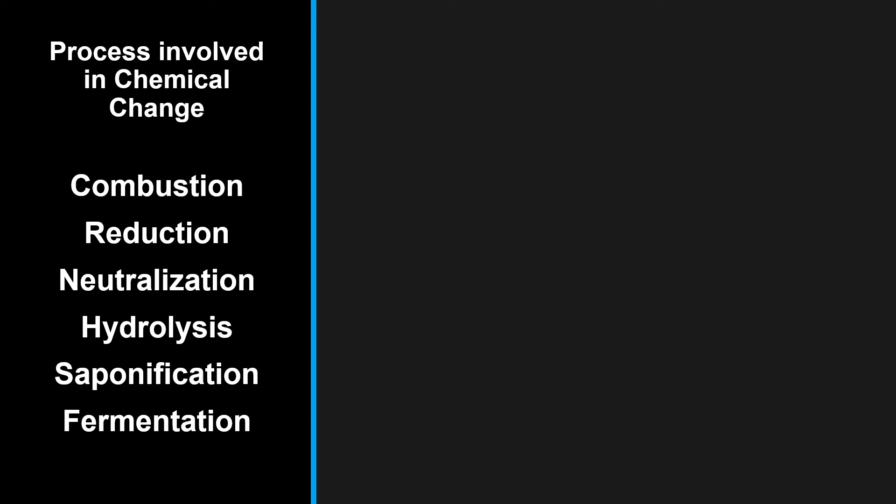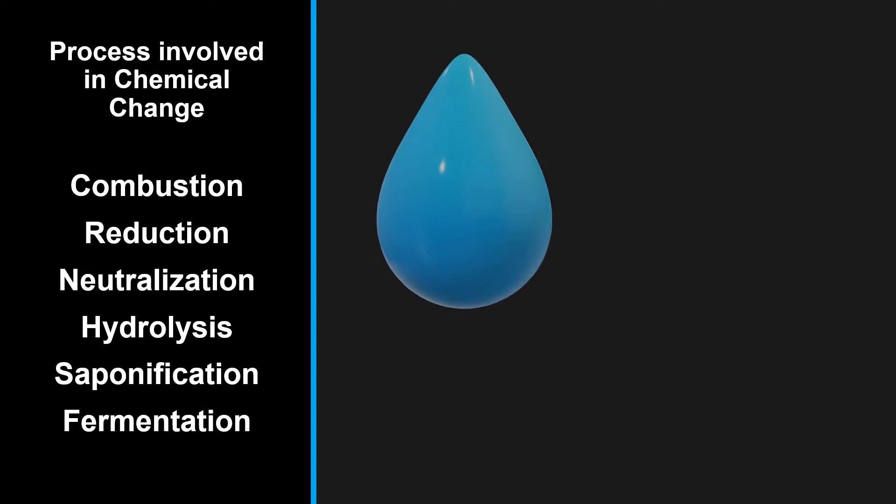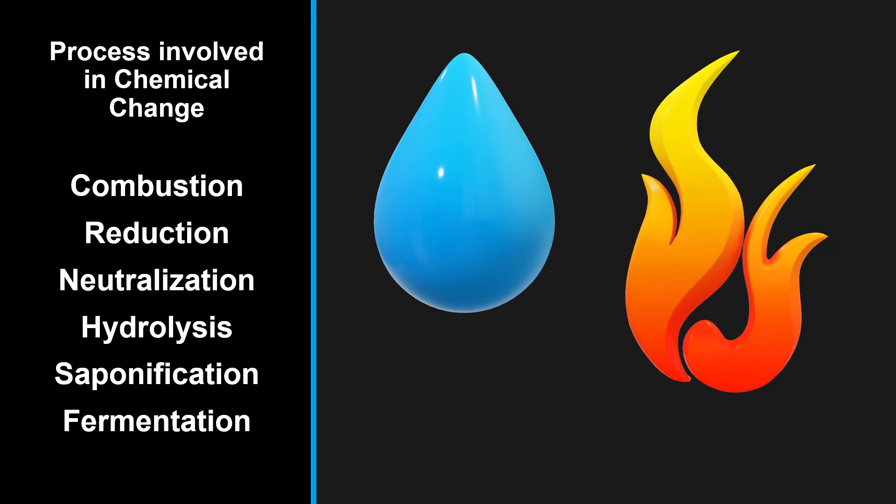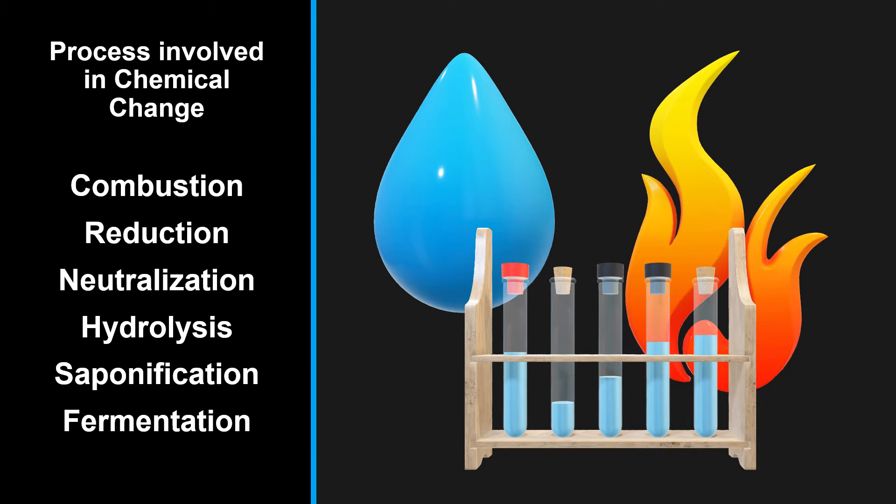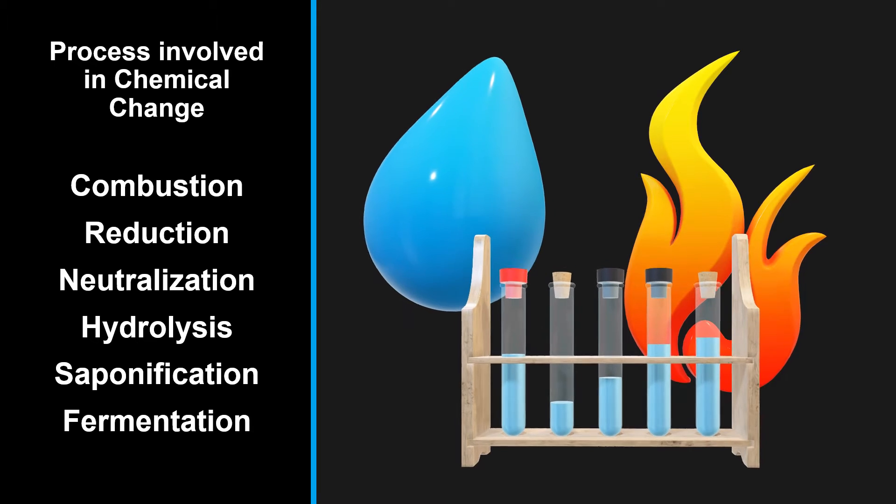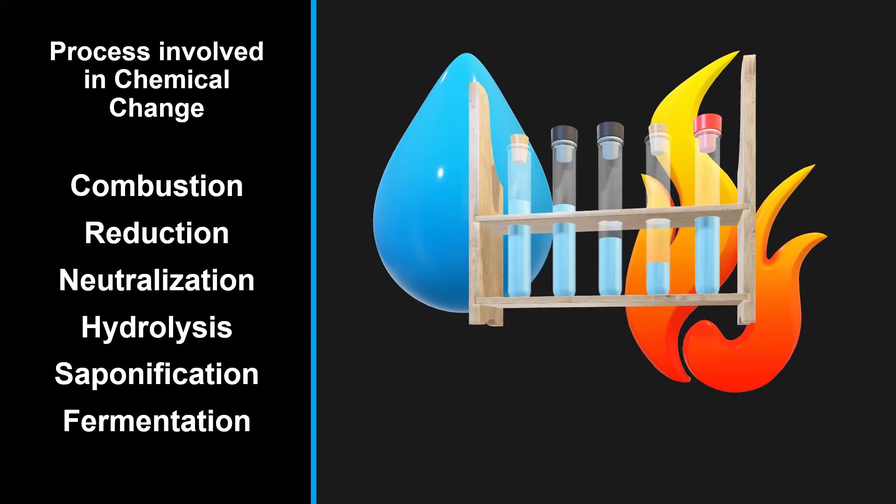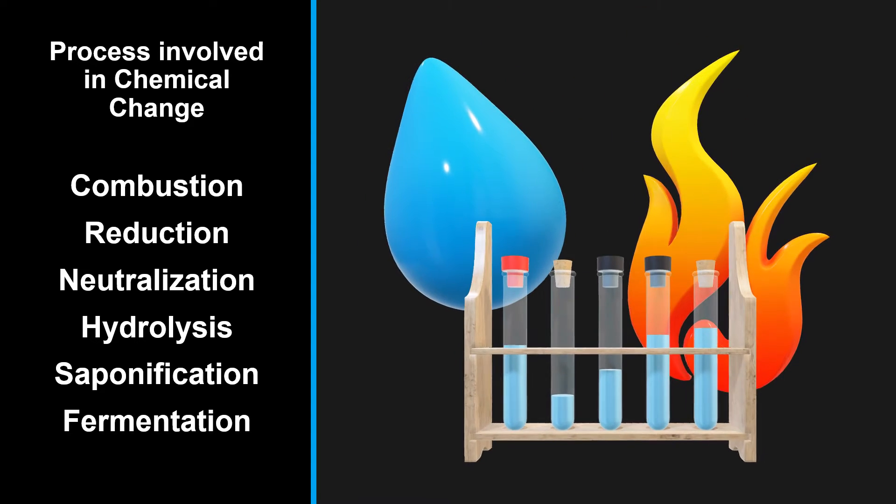A chemical change happens when one chemical substance is transformed into one or more different substances. Chemical changes occur through the process of chemical reactions, and the resulting substances have different properties because their atoms and molecules are arranged differently.